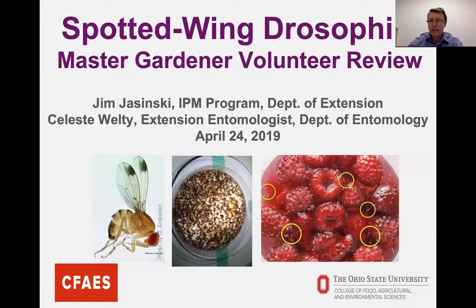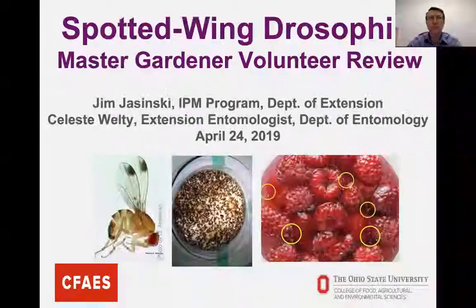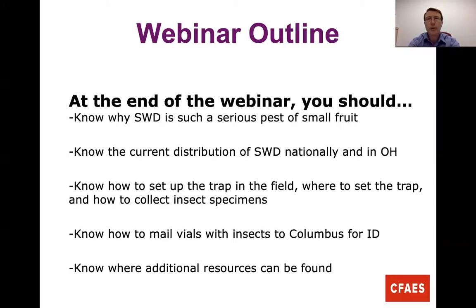This is the initial slide — Celeste and I talking about the spotted wing drosophila project. At the end of the webinar, we're hoping you'll understand why spotted wing is a serious pest of small fruit, understand its distribution through the country and Ohio, know how to set the trap up in the field, how to collect specimens, ship vials to Columbus for identification, and where to find additional resources.